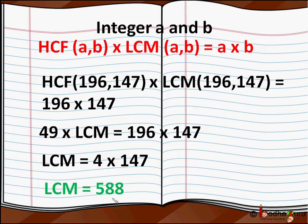That is, LCM of 196 and 147 is 588. This means the fair and the circus will happen again after 588 days from today.